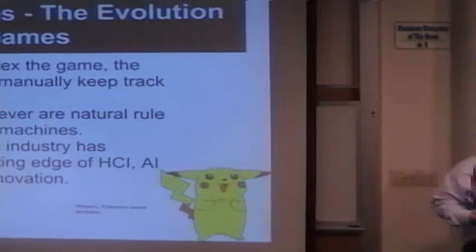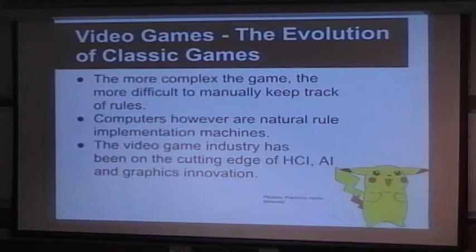This is Pikachu from Nintendo's Pokemon series. The more complex the game, the more difficult it was to manually keep track of the rules. How many people know how to play chess? Most of you. How many know how to play bridge? Exactly — the more complex the rules get, the harder they are to remember. Computers are natural rule followers; they keep track of rules for the player and create a world where you can play games without other people.